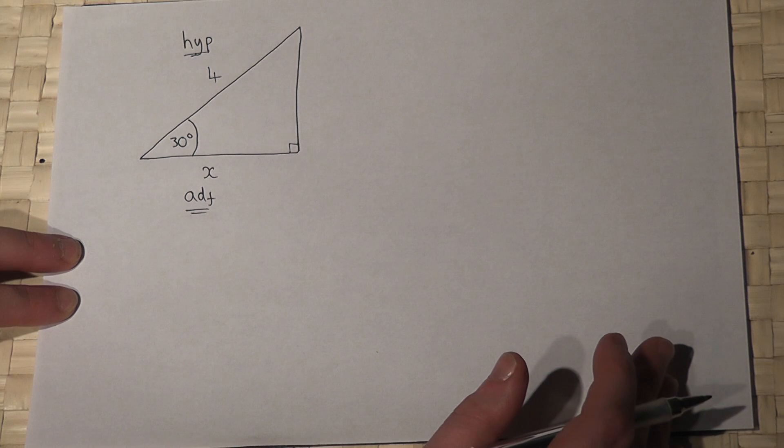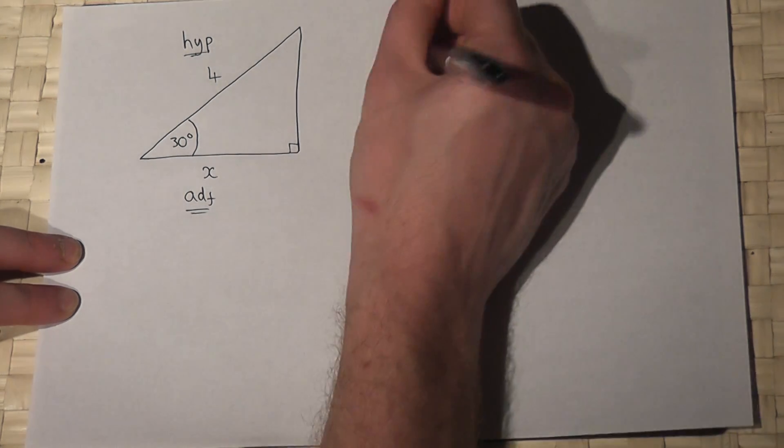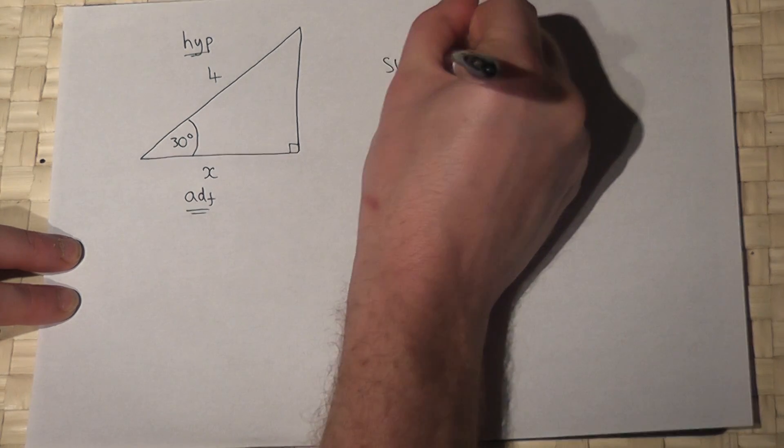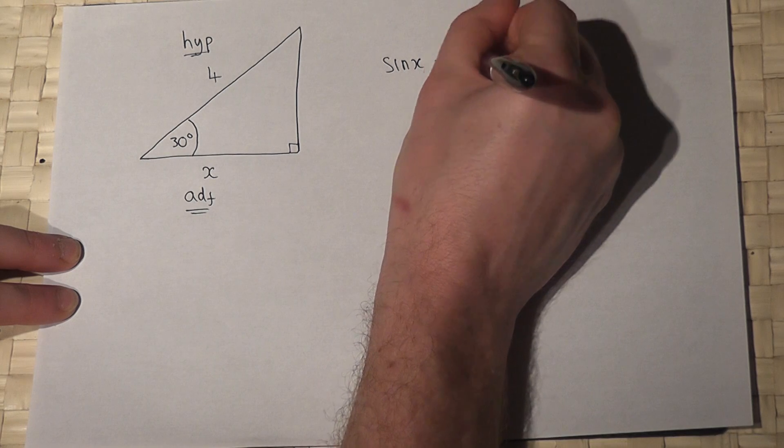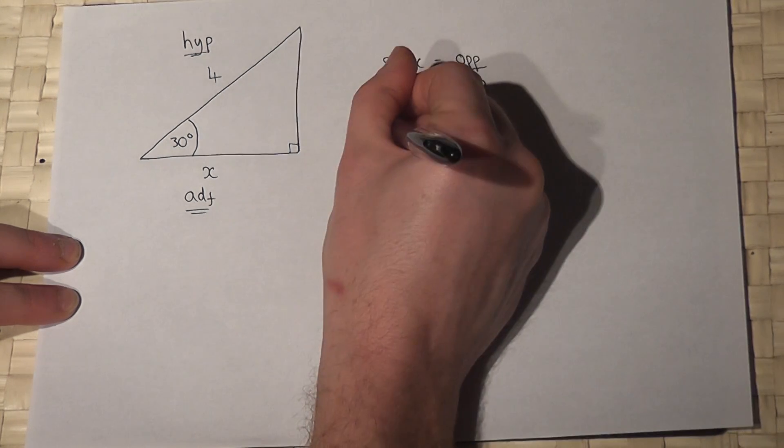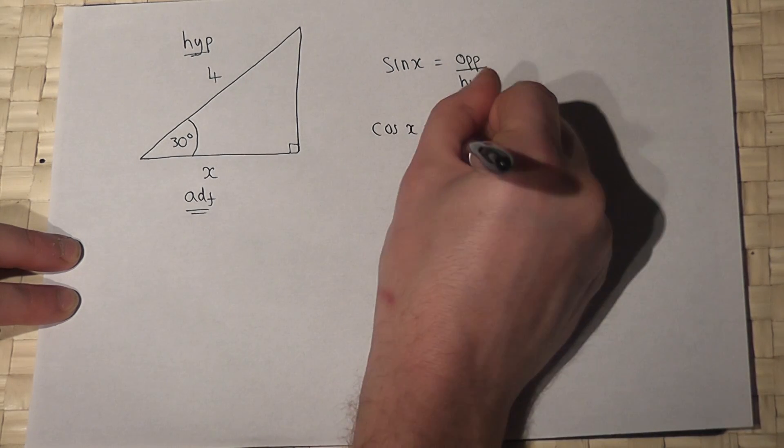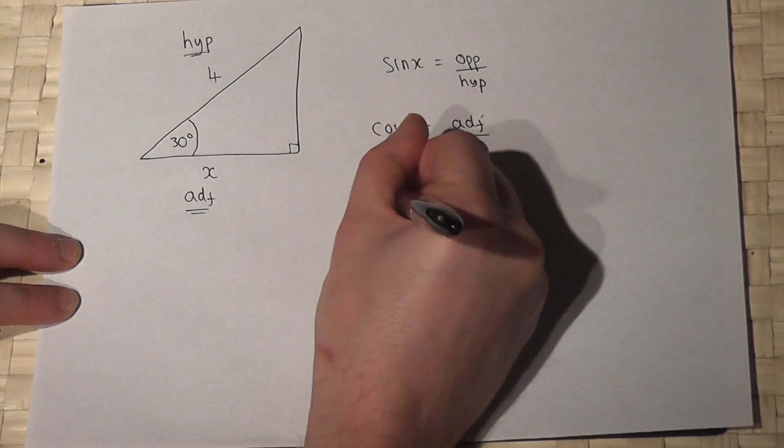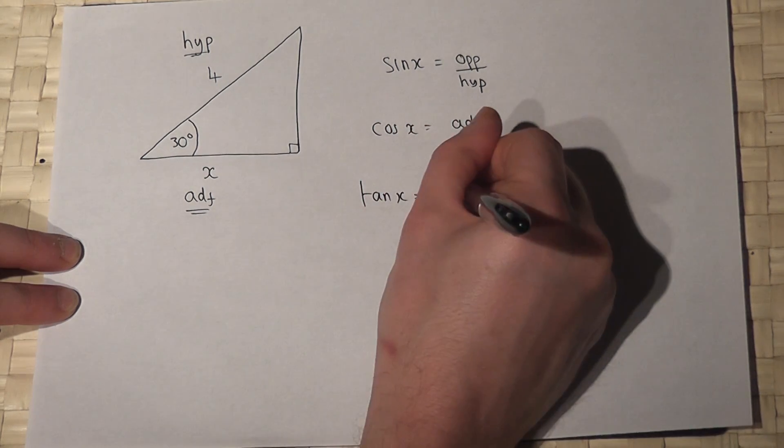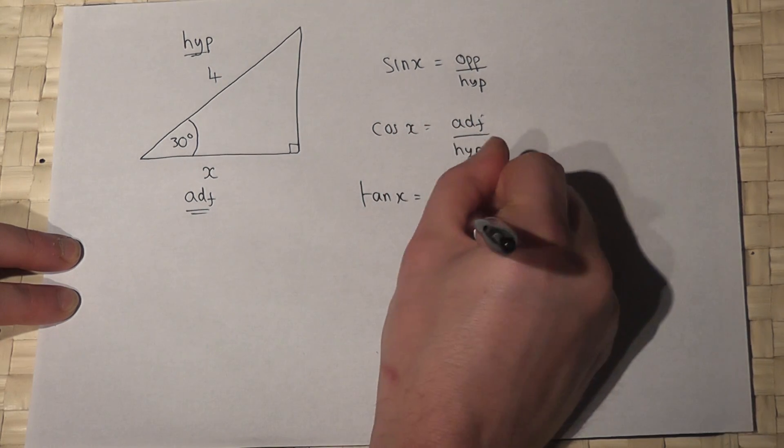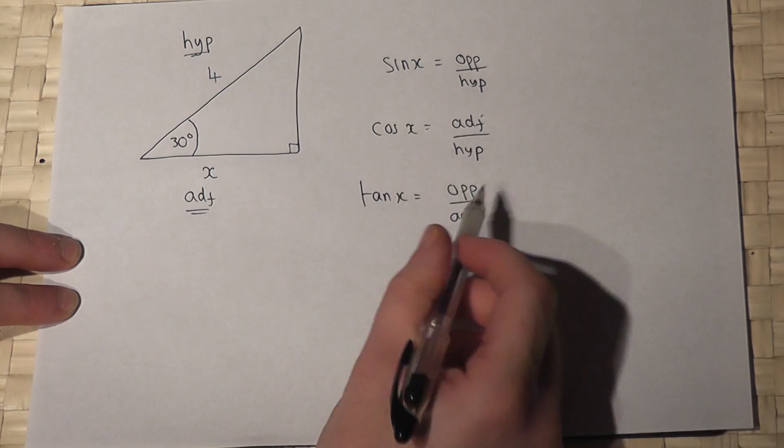SOHCAHTOA gives us three equations to choose from. Either sine of the angle is opposite over hypotenuse, cos of the angle is adjacent over hypotenuse, or tan of the angle is opposite over adjacent. Here x denotes the angle.